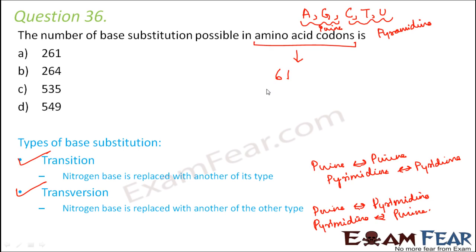Each of these codons is made up of 3 nitrogenous bases. For example, AUG, AGU, UGA. If you talk about the number of base substitutions possible, each base can undergo substitution in 2 ways. Each base can either undergo transition or transversion. Each codon has 3 bases and each base can undergo substitution in 2 ways.